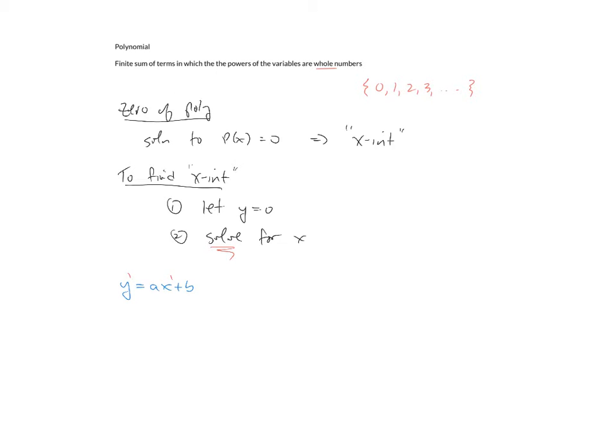To solve this for the zeros, we would set it equal to 0 and then we would just solve for x. So x equals negative b over a. Subtract the b, divide by a, we get x all by itself. Very easy to solve a linear polynomial to find the zeros.